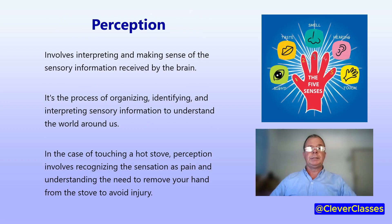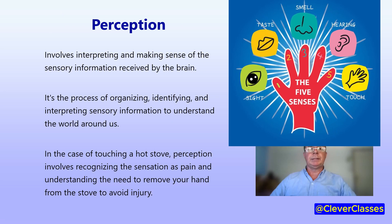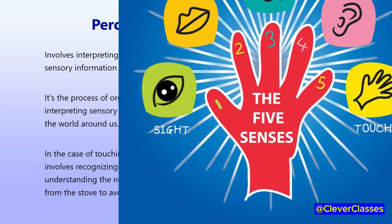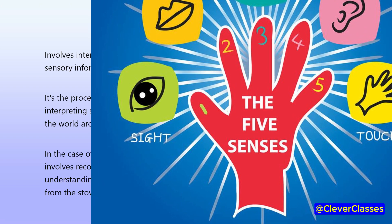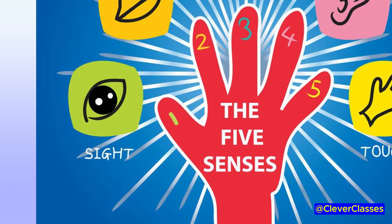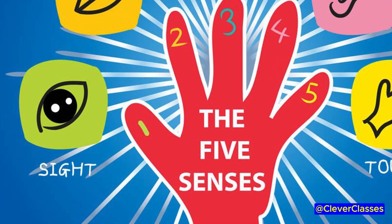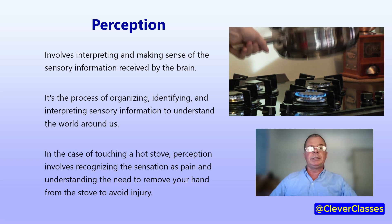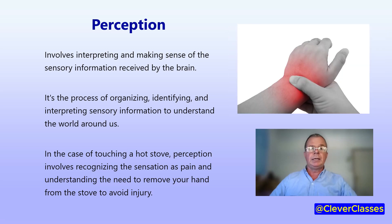Perception involves interpreting and making sense of the sensory information received by the brain. It's the process of organising, identifying and interpreting sensory information to understand the world around us. In the case of touching a hot stove, perception involves recognising the sensation as pain and understanding the need to remove your hand from the stove to avoid further injury.